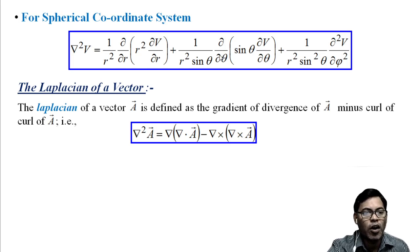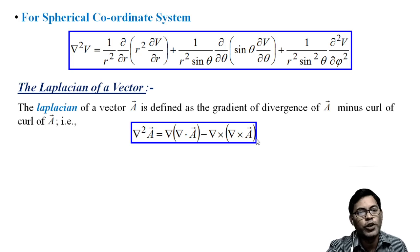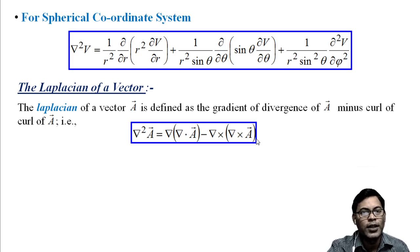The Laplacian of a vector field a is defined as the gradient of the divergence of a minus the curl of the curl of a: del²a = del(del·a) - del×(del×a). With this, we have covered all the vector calculus required to understand electromagnetic field theory. Thank you very much.